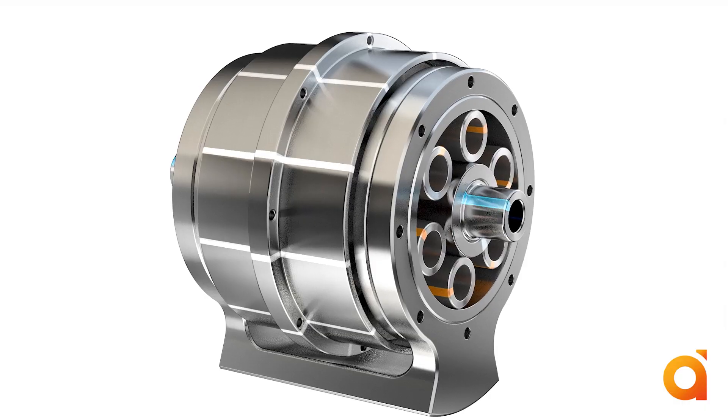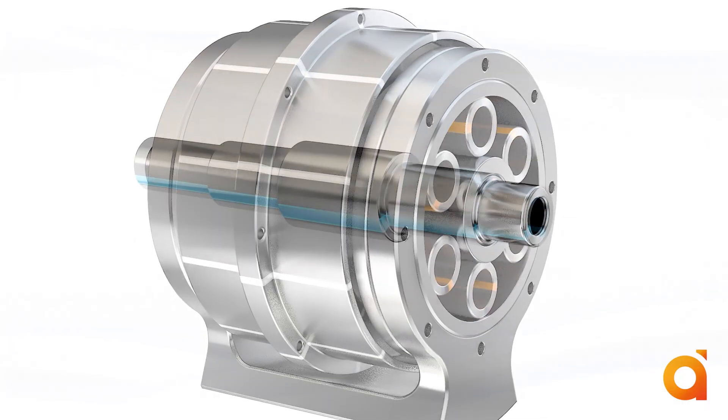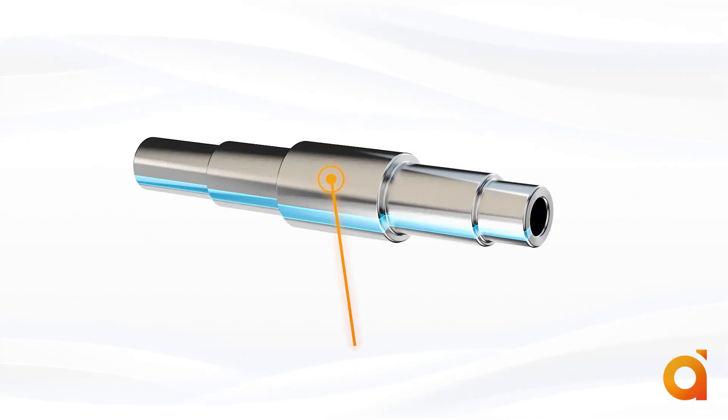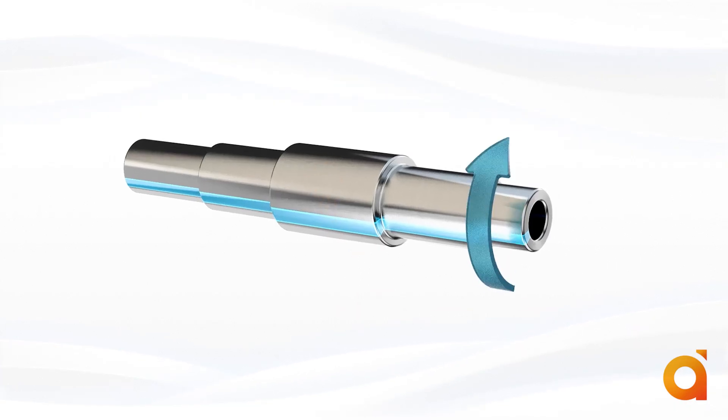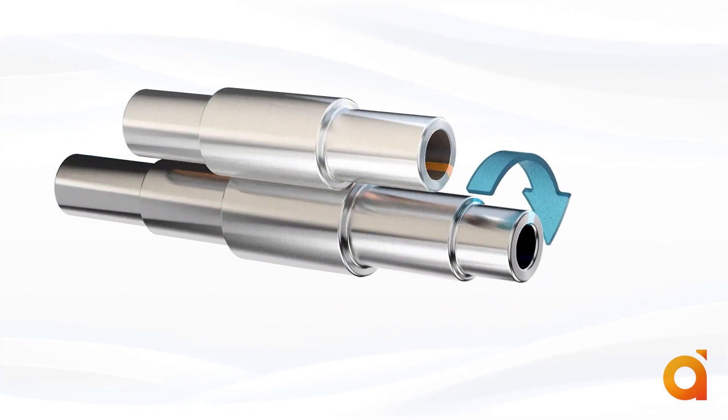This is how torque flows through the Archimedes drive. We start where motion begins, at the input sun.